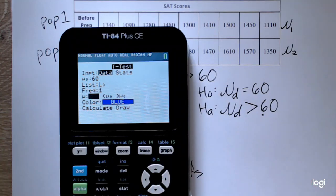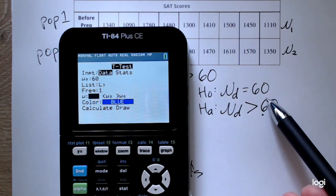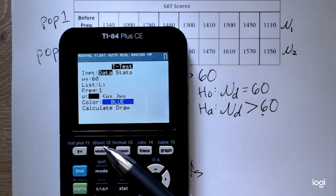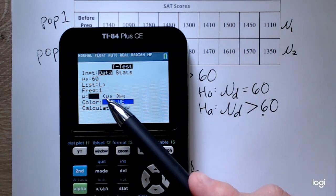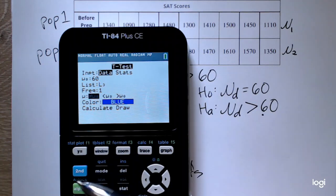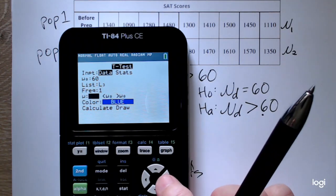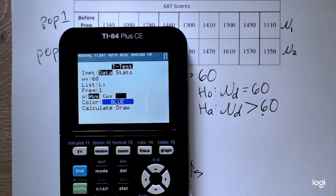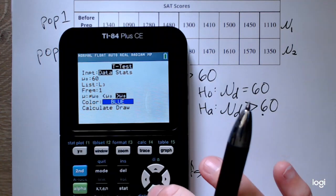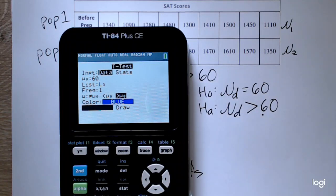If I wanted to make this a lower tail test, I could have. I would have to make this negative 60, and I would have to subtract in the other direction. But I think recognizing that we want the after to be greater than the before by more than 60, it lends itself better to an upper tail test with the wording of the problem. Now I'm going to go down and calculate.